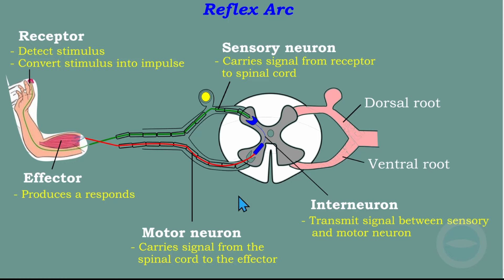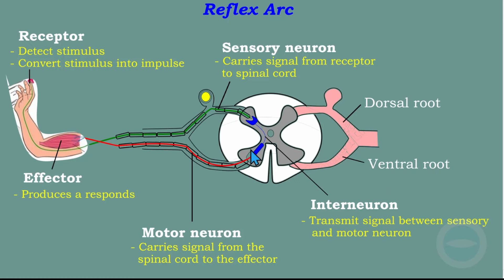We must also know the dorsal side and the ventral side. The dorsal side is at the back — it is where the sensory neuron enters the spinal cord. The ventral side is at the front. So: dorsal is at the back, ventral is at the front.